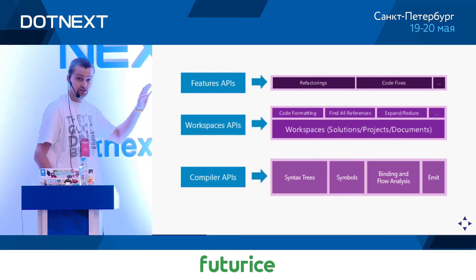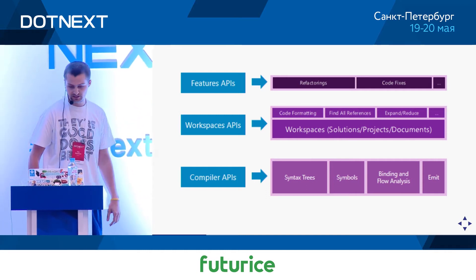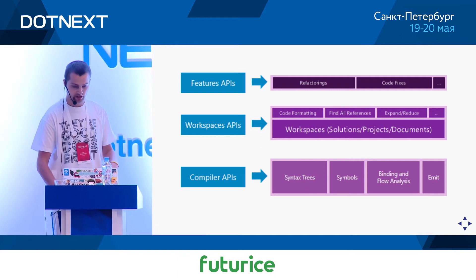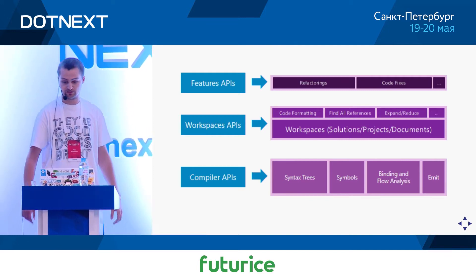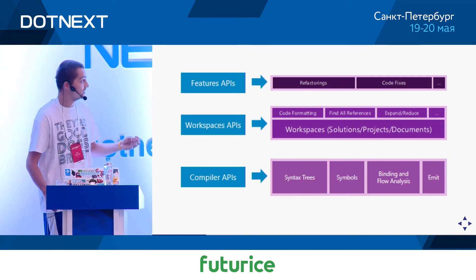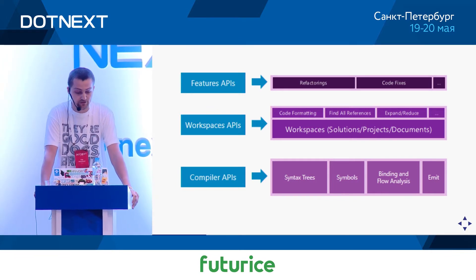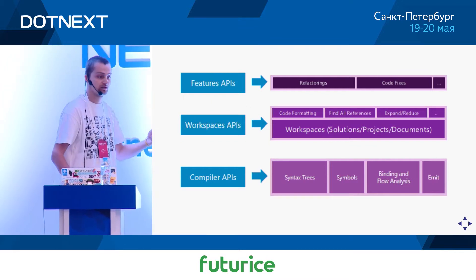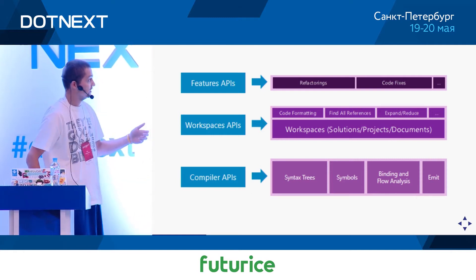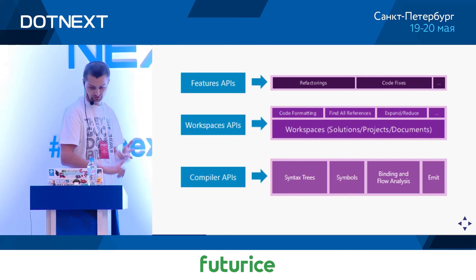Finally, we have the features APIs, and this is what I wanted to focus on most today — it's something completely new with no corresponding concept in the old compiler, which is why I think it's so exciting. The features APIs allow us to build little libraries that you can plug into the compiler, have the compiler pick them up, provide feedback to the user on code quality, and possibly suggest how to fix the code. These are the so-called diagnostic analyzers, code fixes, and refactorings.